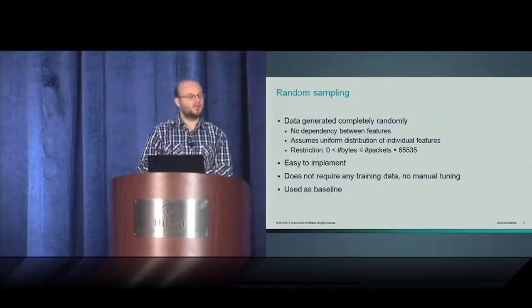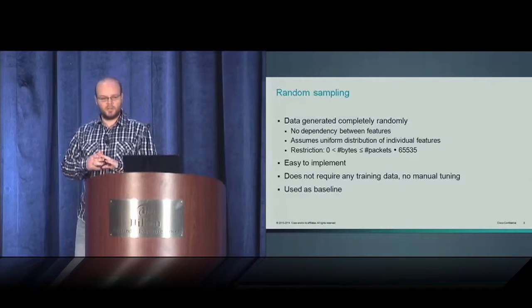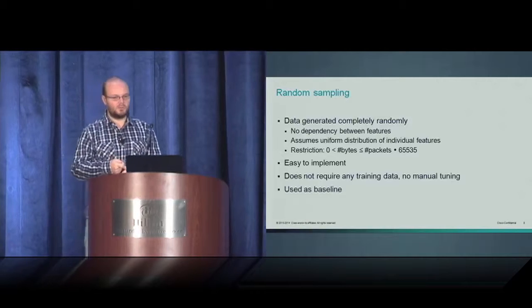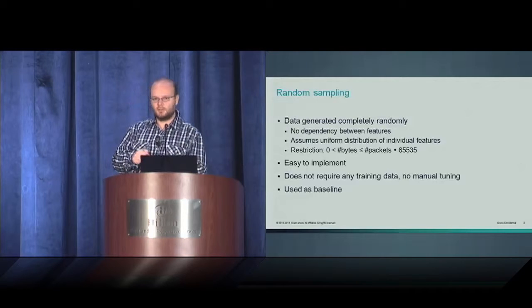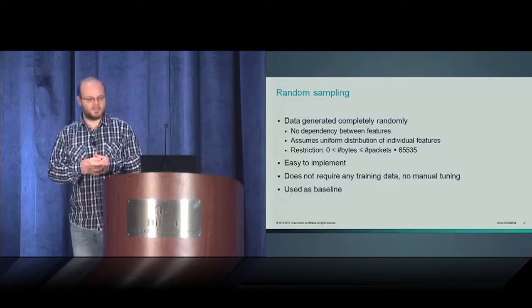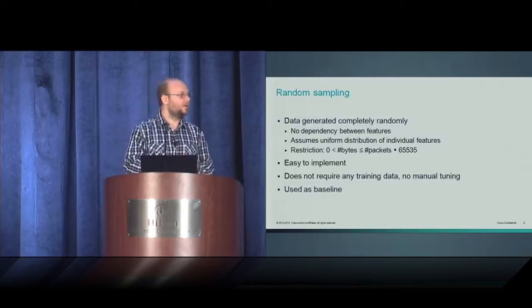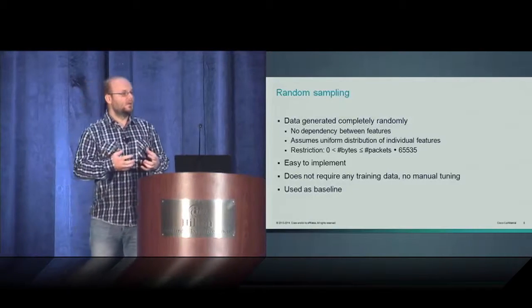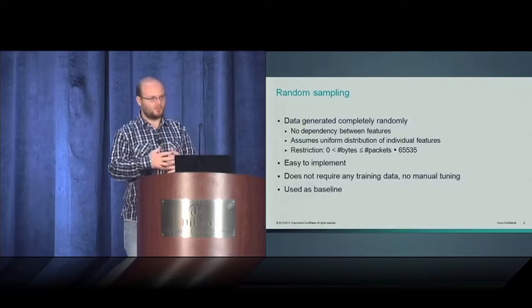First approach, the most basic one, is random sampling. The data are generated completely randomly, but by randomly I mean that there's no dependency between individual NetFlow features. We assume uniform distribution on all different features, and only restriction is that the number of bytes has to be valid with respect to the number of packets. It's easy to implement, doesn't require any tuning or training data, and can be used as a baseline. For example, if you develop a new anomaly detection algorithm, you can use it as a smoke test to verify that your anomaly detection methods won't break on this obscure data.